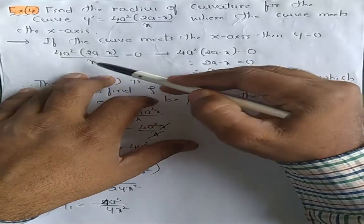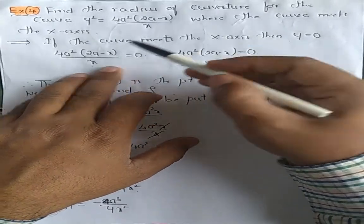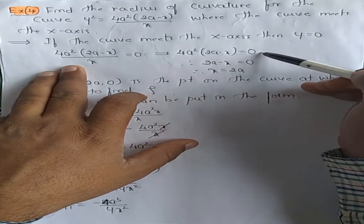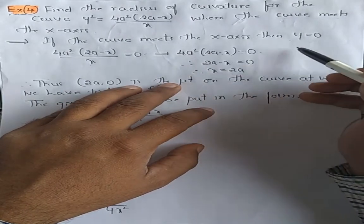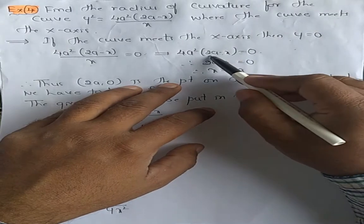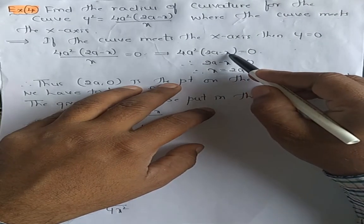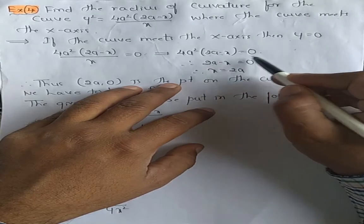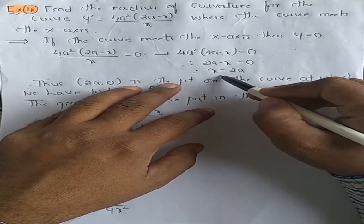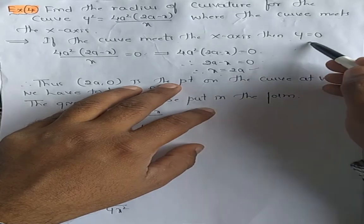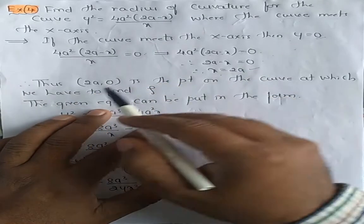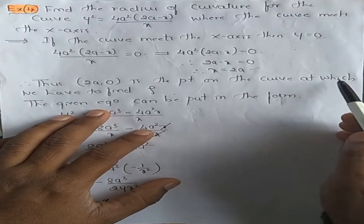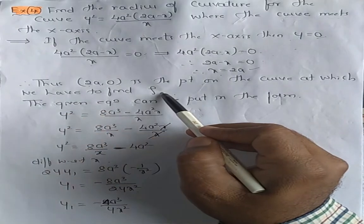Now substitute y = 0 into the given curve. This gives 0 = 4a²·(2a − x)/x. Transferring terms, we get 4a²·(2a − x) = 0, so 2a − x = 0, therefore x = 2a. So the point is (2a, 0).